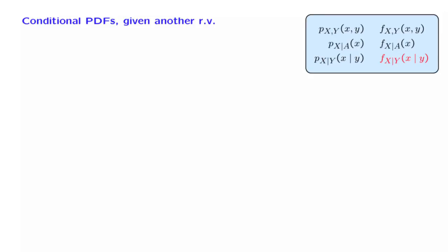By now we have introduced all sorts of PMFs for the discrete case: the joint PMF, the conditional PMF given an event, and the conditional PMF of one random variable given another. We're moving along with a program of defining analogous concepts for the continuous case. We have already discussed the joint PDF and the conditional PDF given an event. The next item is to define a conditional PDF of one random variable given another.